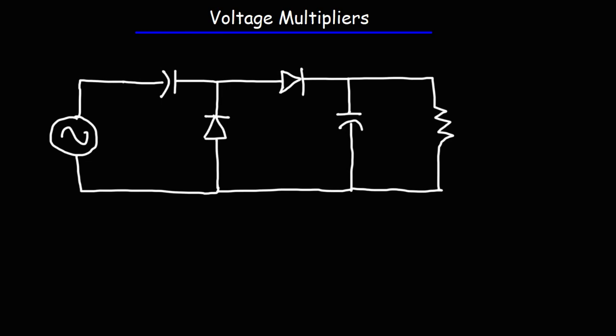In this video we're going to talk about voltage multipliers, a circuit that can increase the voltage of the input by some multiple. In this example we have a half-wave voltage doubler. We have an AC signal at the input and we're going to get a DC signal at the output. We have two capacitors C1 and C2, two diodes D1 and D2, and a load resistor.